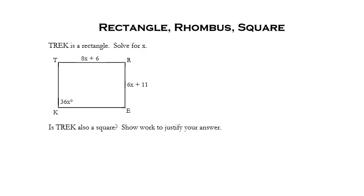In this case, I'm telling you that this figure is a rectangle. All we know for sure is that it is a rectangle, so all we can use are the properties of a rectangle. We're going to use that to solve for x. Once I know what the value of x is, I'm going to use that to decide if it's also a square.